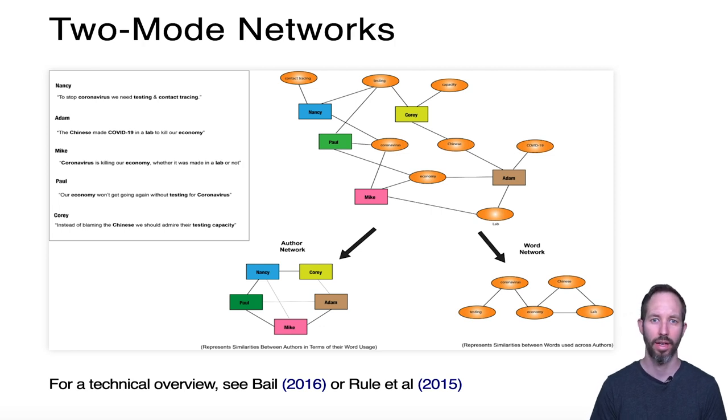And so every box has a connection to a noun that is used by the person in that box, and we thus can describe patterns in the way that people jointly use words. So if you follow me down to the center left of this diagram, you'll see what you might call an author network, or you might also call it the projection of the author network. Basically what we're doing in this graph is we're connecting people who use similar words, and we're connecting people who use similar common words with weaker edges and people who use similar unusual words with stronger edges.